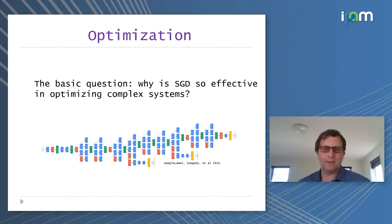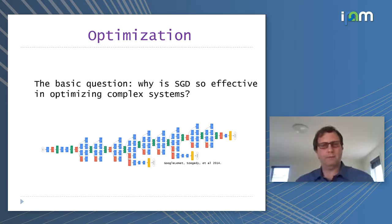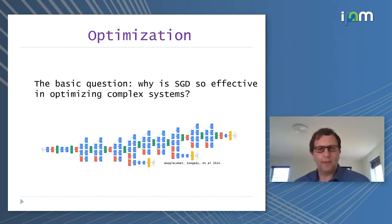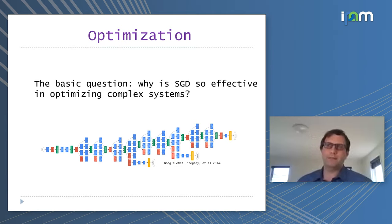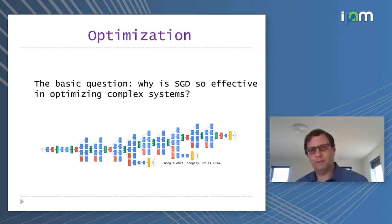Modern machine learning systems like neural networks are extremely complex and very far from convexity. So why are methods such as stochastic gradient descent or gradient descent so effective for systems like this? As we will see, there has been an emerging understanding that over-parameterization really helps us understand why effective optimization is possible.